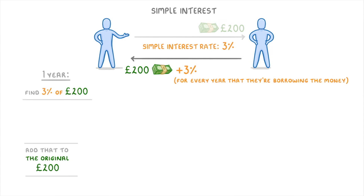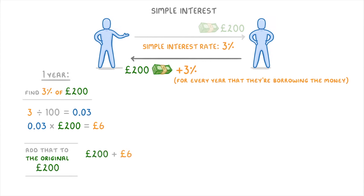We've already covered how to find a percentage of a number in another video, but the technique we'll use here is to take the percentage number — so 3 — divide it by 100 to turn it into a decimal, so 0.03, and then multiply that by the number that you want a percentage of. So because we want 3% of £200, we do 0.03 times 200, which is £6. Now that we know the interest would be £6 a year, we just add back to the original £200 to find out that the person would owe you £206.